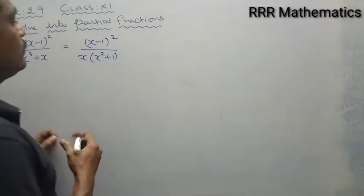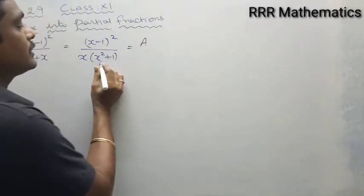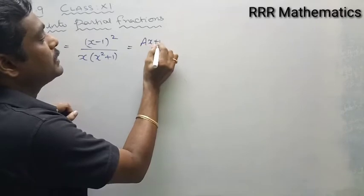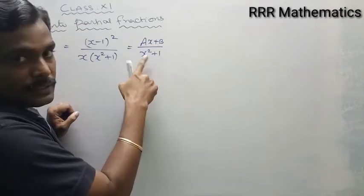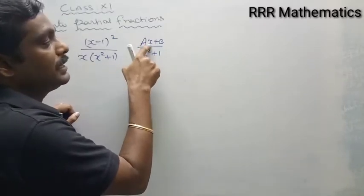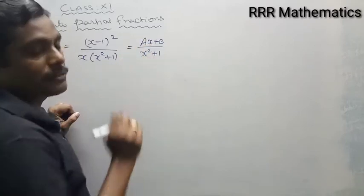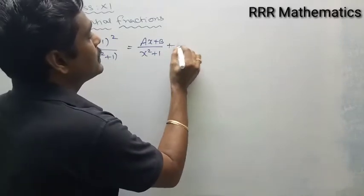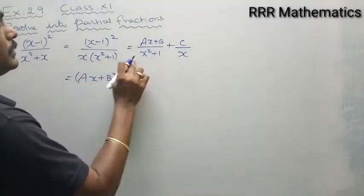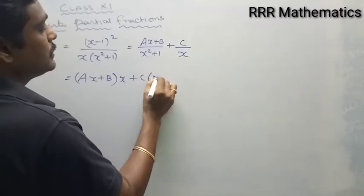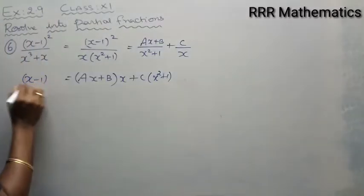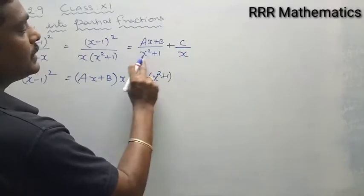Now, applying partial fractions: for x square plus 1, I cannot factorize this quadratic — I cannot get any real value. So I will replace the numerator with a linear general expression, that is ax plus b divided by x square plus 1. For x, I will introduce a constant c divided by x.